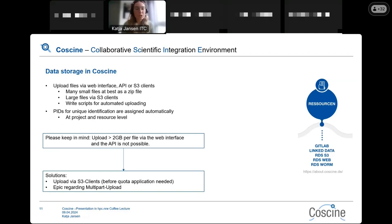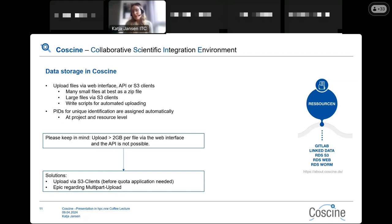PIDs for unique identification are assigned automatically. When you go to your project and resource description, you can find the PIDs, copy them, and if someone searches for the PIDs they will come to a landing page. Note that at the moment an upload for files larger than 2 GB per file via the web interface and the API is not possible due to browser and API limitations.